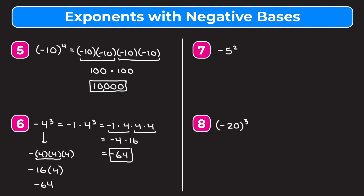Example 7: negative and then 5 squared. We keep the negative on the outside and multiply 5 by itself twice, because we are squaring the 5 not the negative. Five times 5 is 25, so we get negative 25.